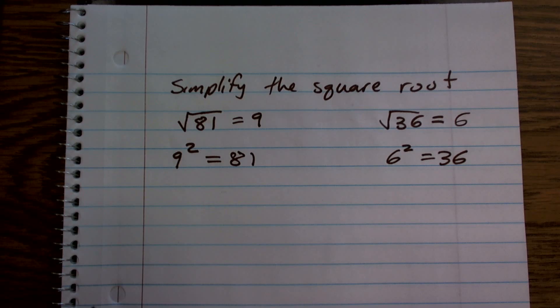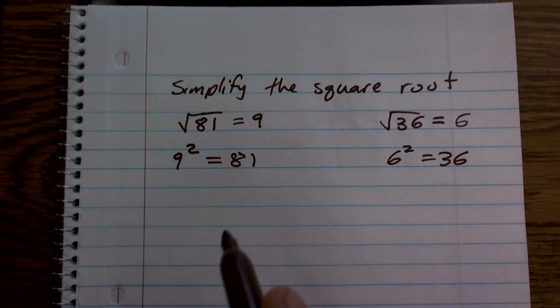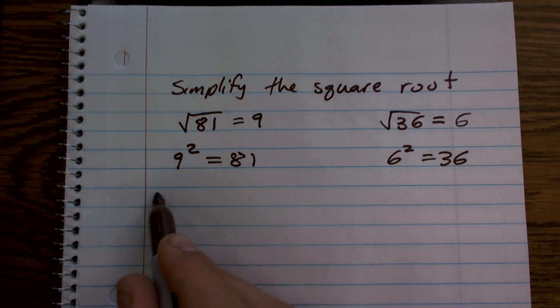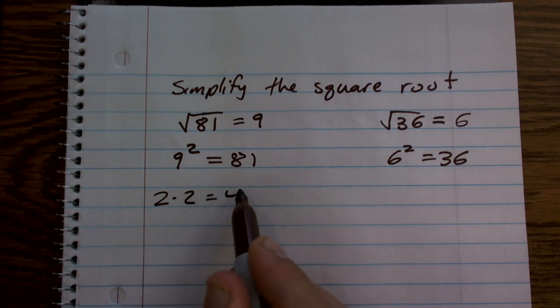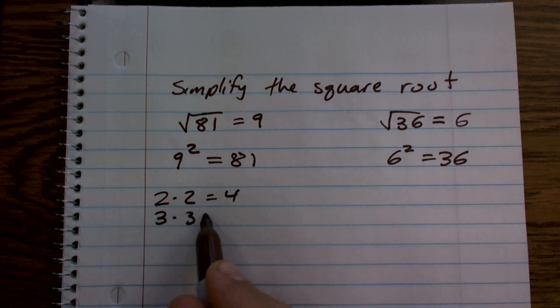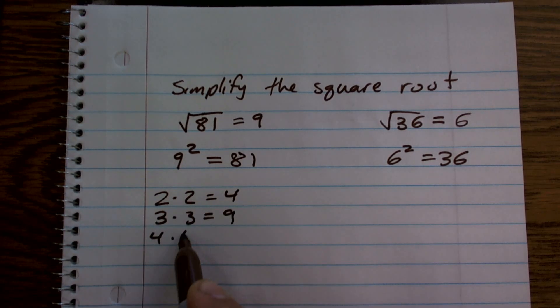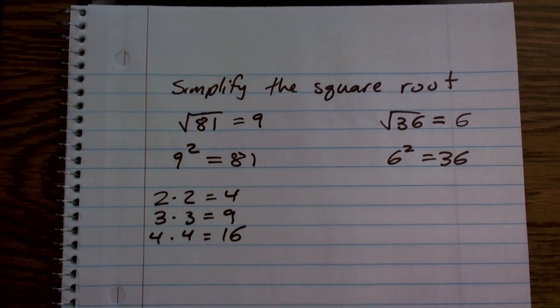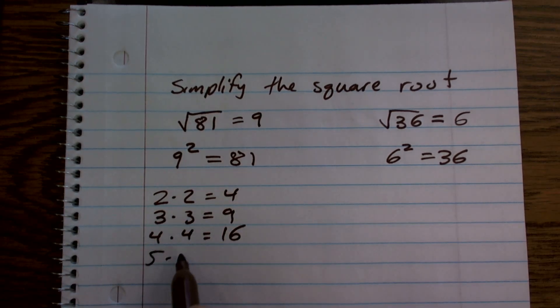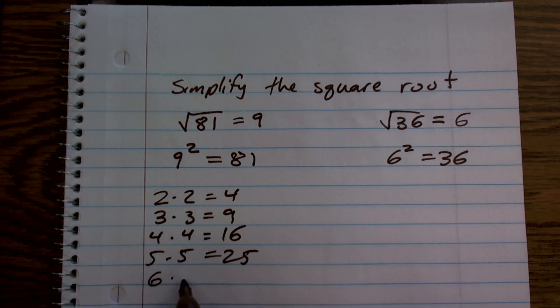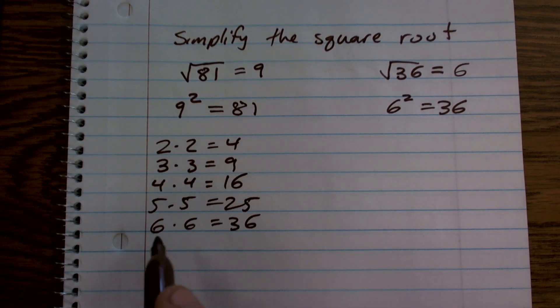So what I want you to do is please just have these memorized. You should know 2 times 2 is 4, 3 times 3 equals 9. And to get a little dorky, I remember when I first learned my multiplication symbols or multiplication skills, the first thing I did to remember was I just had these all memorized.